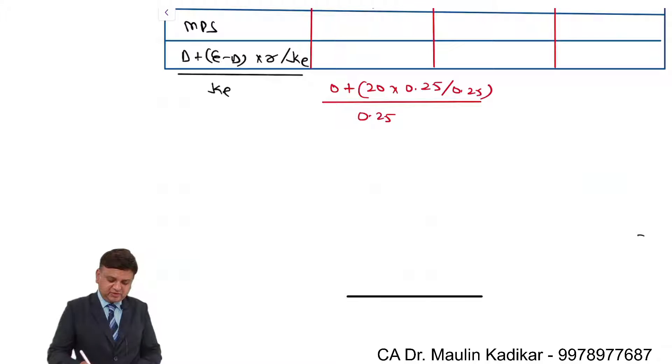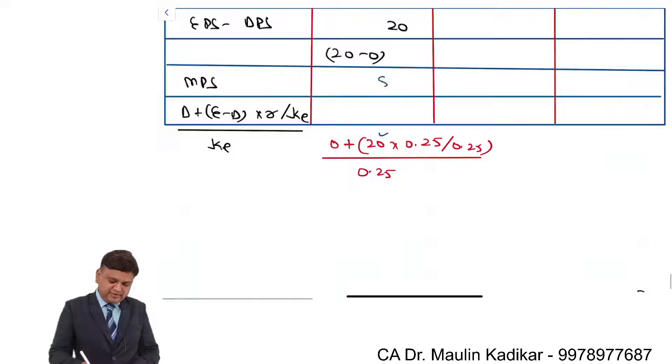Of course, we understand that for this 20 multiplication division same value. So 20 will remain same divided by 0.25, that will give answer of 80 rupees.